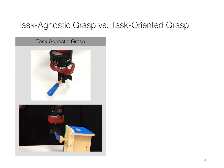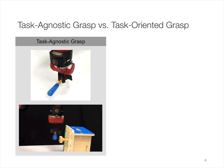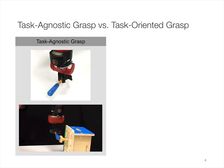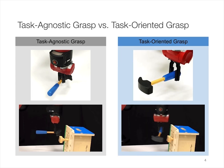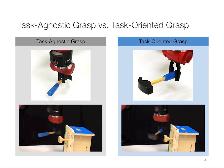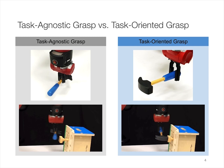Most previous learning-based grasping models do not consider the task constraints. For example, a grasp close to the center of mass can robustly lift up the object. But consider hammering a peg into a slot — this task-agnostic grasp might not be suitable for achieving the goal. For the hammering task, the robot is supposed to grasp the handle of the hammer, thus generating a large enough momentum when hitting the peg.